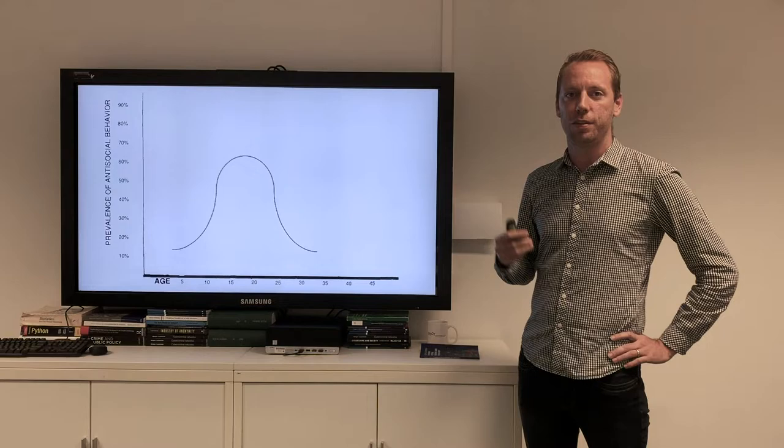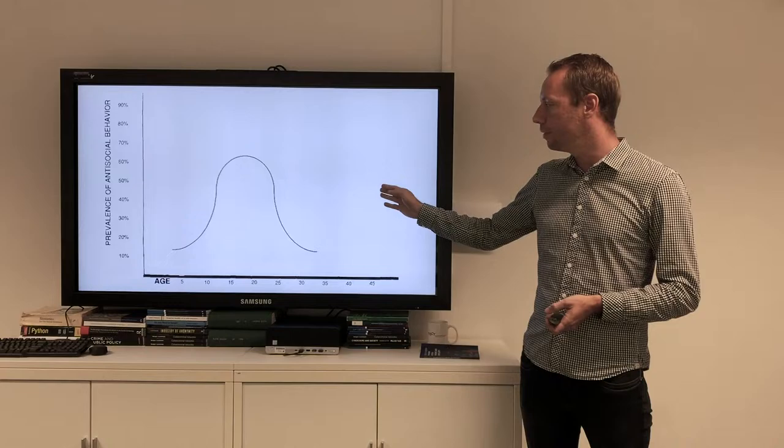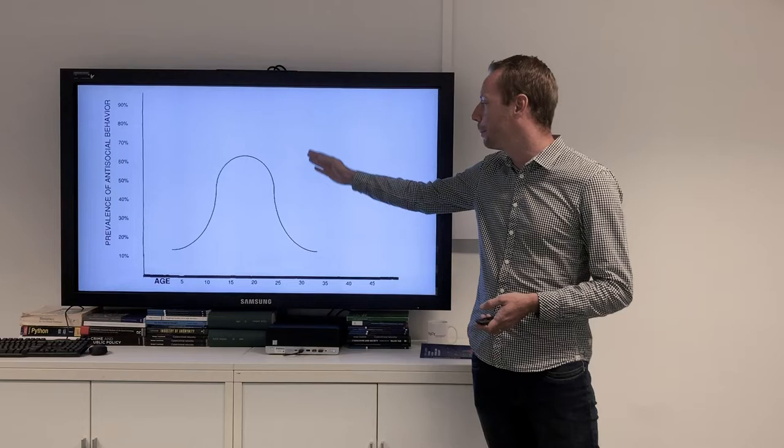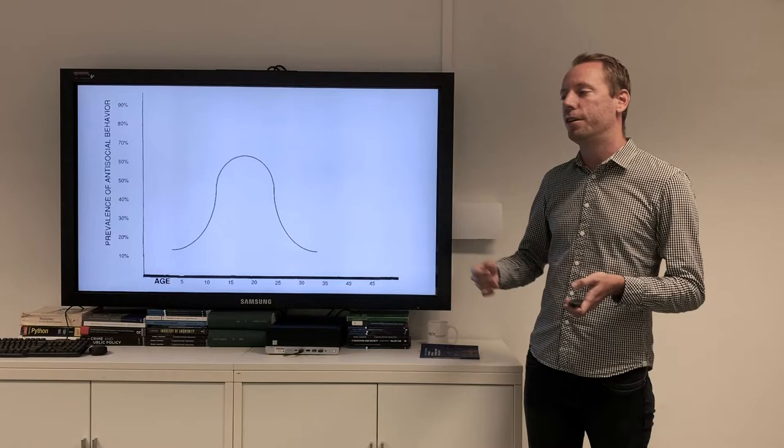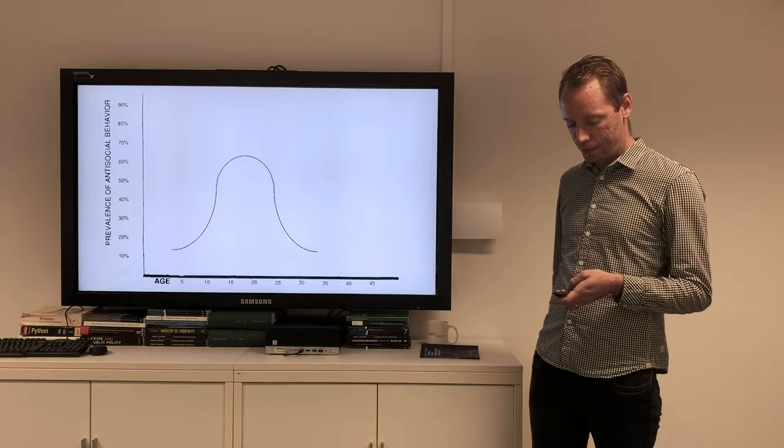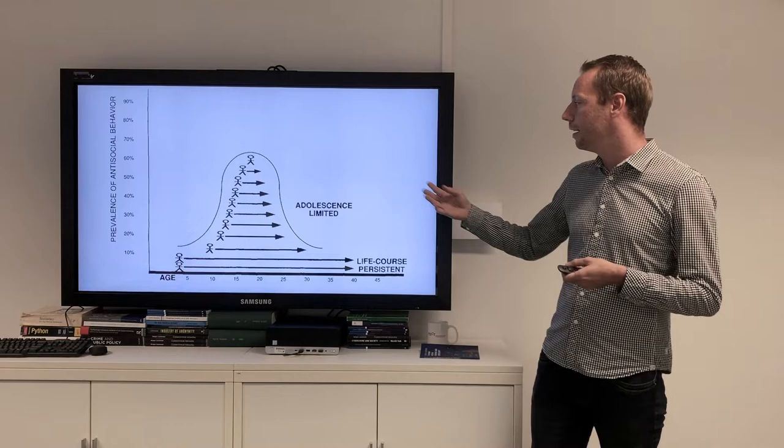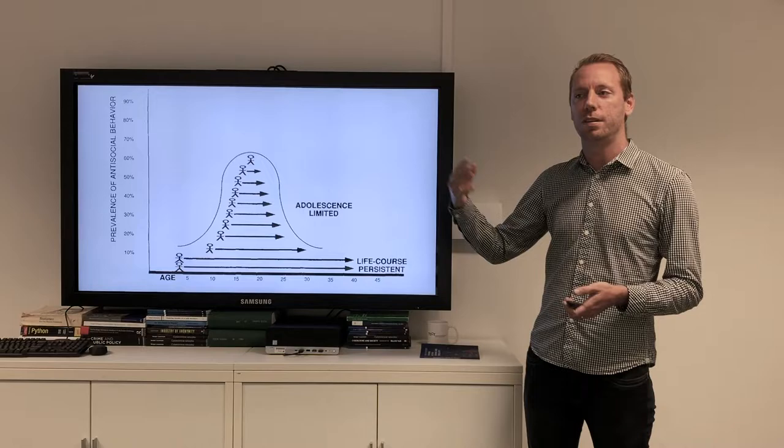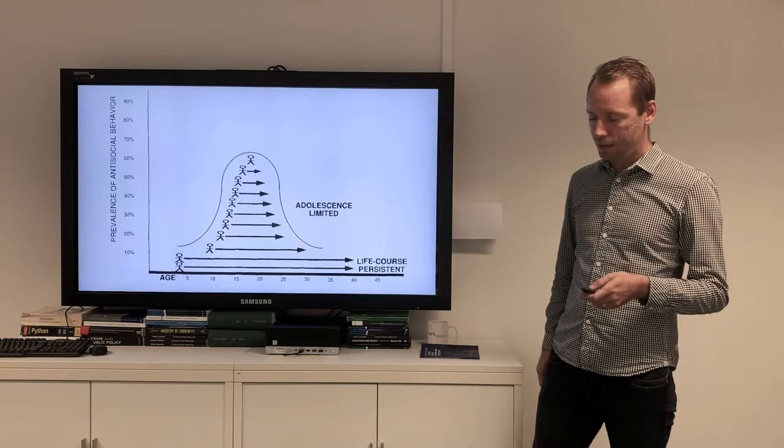One of the most often found results in criminology and life-course criminology in particular is the age-crime curve, which basically shows that antisocial and criminal behavior rapidly increases over the life course, peaks in adolescence or early adulthood, and afterwards rapidly decreases again. However, there is some discussion about whether every person follows the same curve or whether there are different types of criminals with different developmental trajectories. If you add that criminal behavior, you also get the age-crime curve.